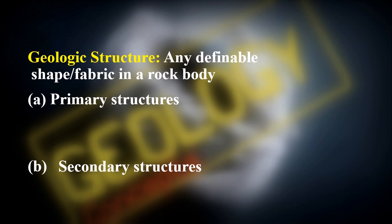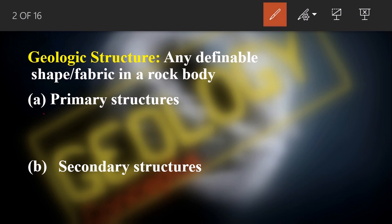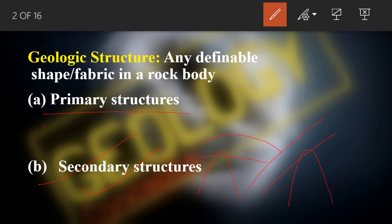There are two types of geological structures. Primary structures are formed during or shortly after the deposition of rock — these include structures found in sedimentary and igneous rocks. Secondary structures are formed in response to forces generated by plate interactions, such as subduction zones, producing features like folds and faults. In this first three videos, we will look at primary structures.